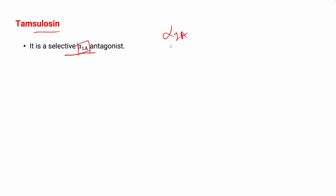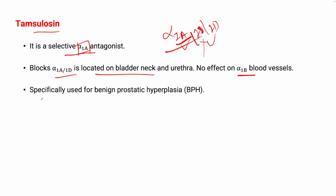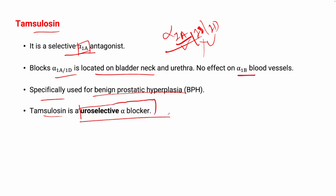The next drug is tamsulosin, which is now more preferred. It is a selective alpha-1a antagonist — preferably blocking alpha-1a and alpha-1d receptors, which are located in the bladder neck and urethra — so there is no effect on alpha-1b receptors found in blood vessels. Therefore, tamsulosin is called a uro-selective alpha blocker, as alpha-1a and 1d receptors are not found in other parts of the body.